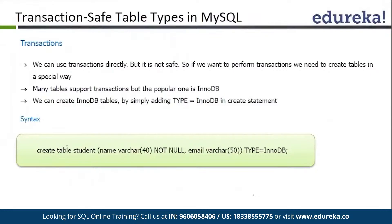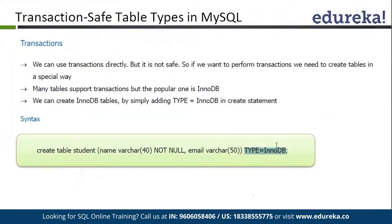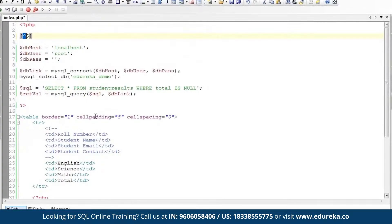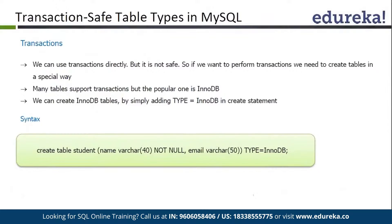Here you can see we are using CREATE TABLE student with column names, column types, sizes, and NOT NULL constraints, and specifying the type of table. We give TYPE = InnoDB. If you don't specify this and you are using MySQL 5.6 or later, it will automatically default to InnoDB. For transactions and referential integrity like foreign key constraints, we use InnoDB tables, not MyISAM.